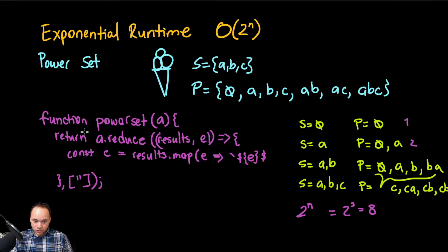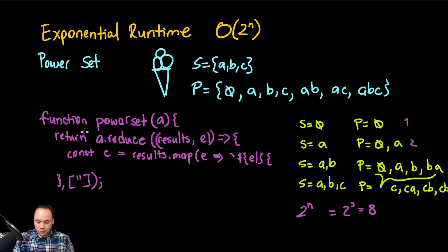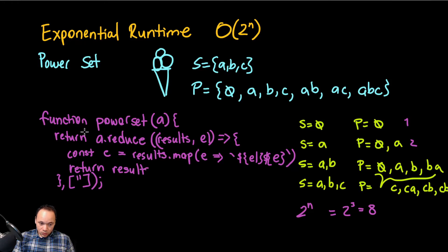To do the concatenation, let's call it c for short — the concatenated values. It will take whatever is in results and map over each element, returning the current el joined with whatever was there before. Then we return whatever was in results concatenated with a new array that is c. So the return is results.concat(c) — and that's it, we have the power set function.